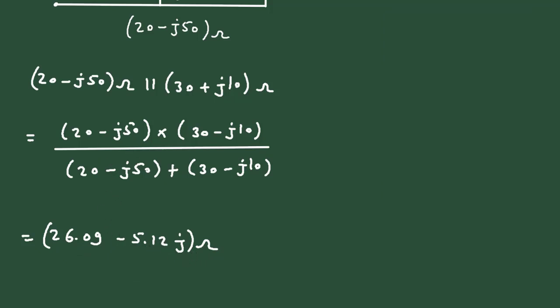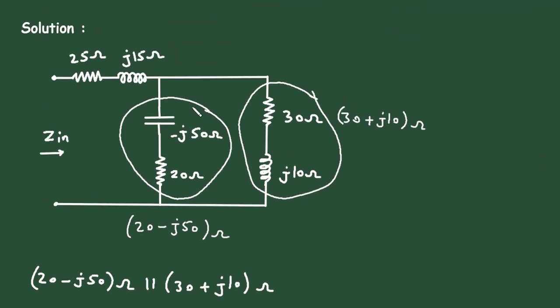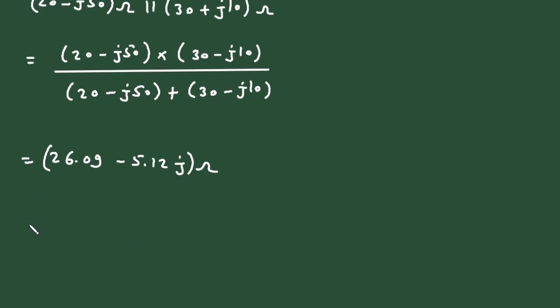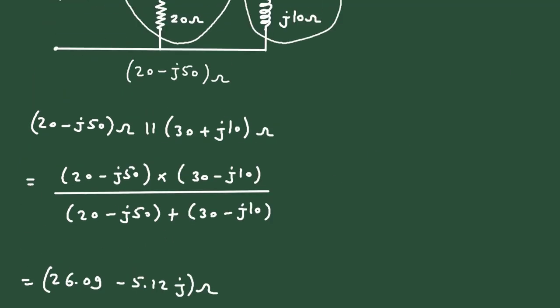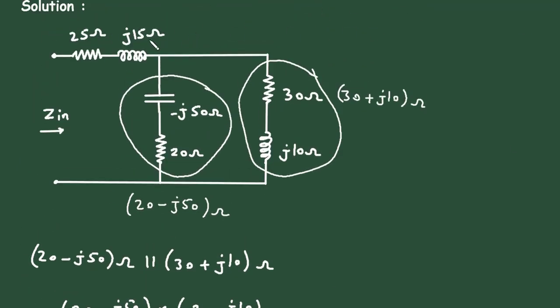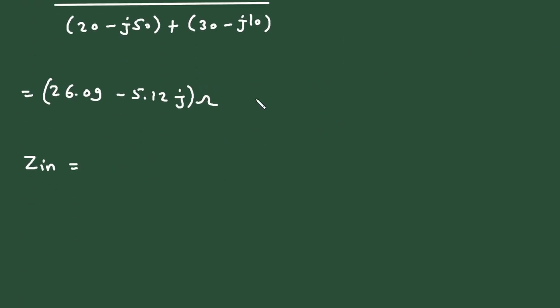Then next these are in series with this 25 plus J15. So therefore Zin is equal to 25 plus J15 then plus this value. Let's copy it from here.